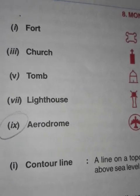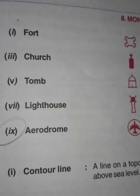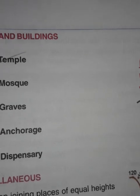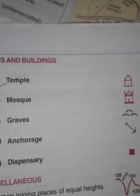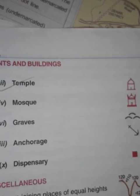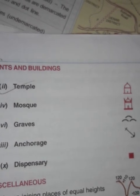These are the symbols shown on the map — some in pictures and some in words, which you will see on the next page. You can see symbols for fort, church, tomb, lighthouse, aerodrome, temple, mosque, graves, anchors, and dispensary, which are shown in circular or square shapes.